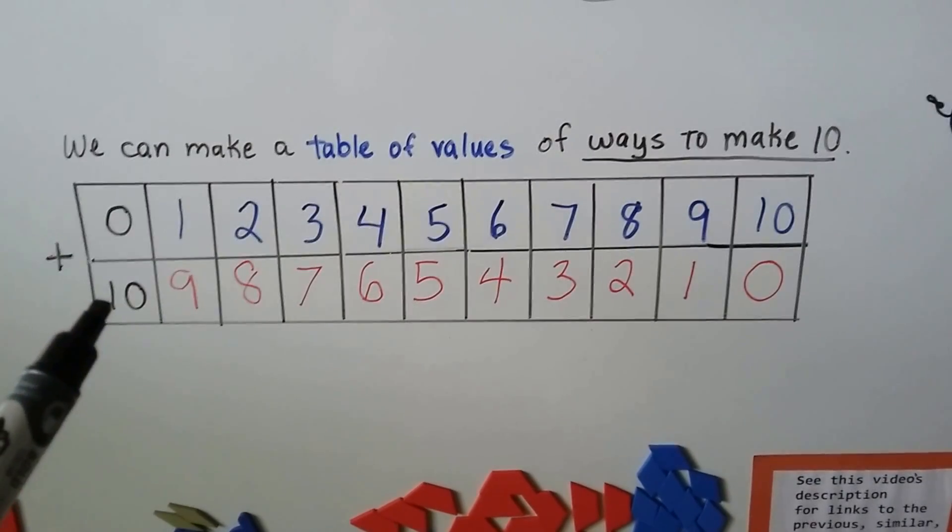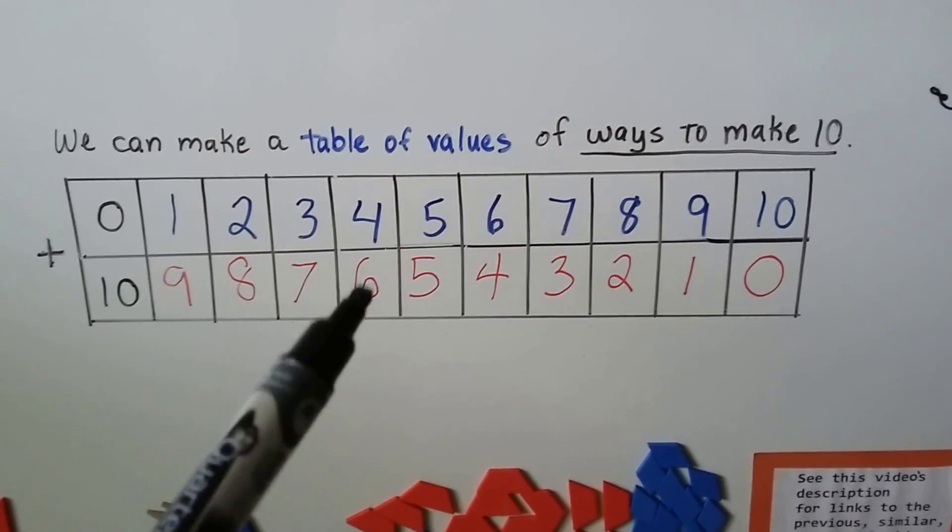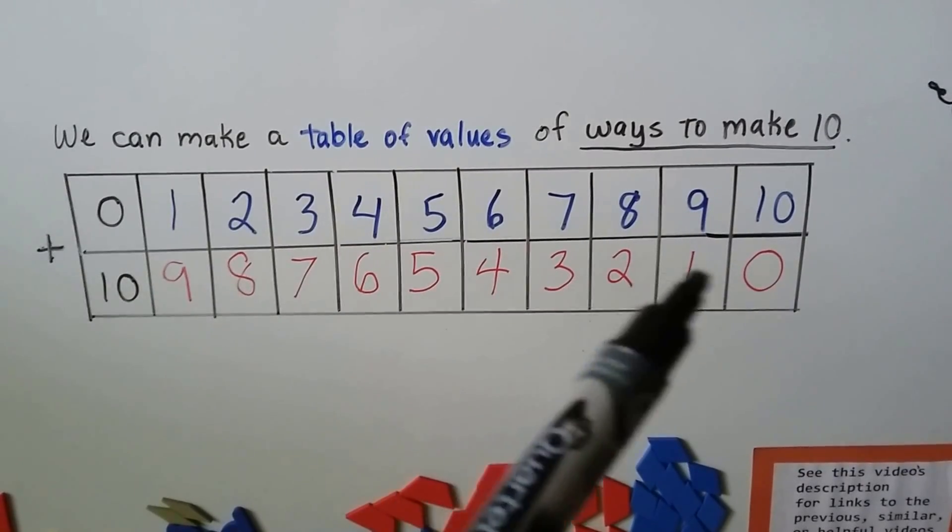The bottom part of the table is going down. 10, 9, 8, 7, 6, 5, 4, 3, 2, 1, 0.